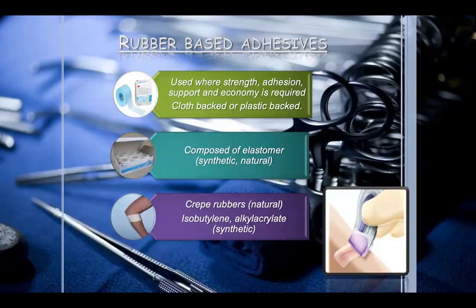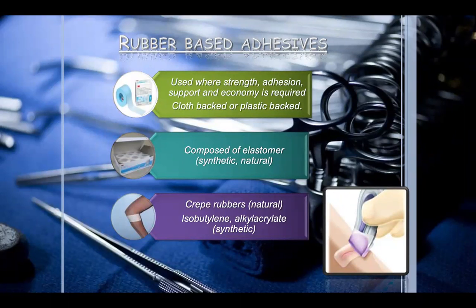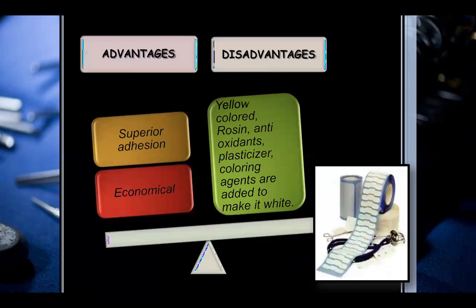Rubber-based adhesives are used where strength, adhesion, support, and economy are required. They use cloth-backed or plastic-backed materials and are composed of elastomers — both synthetic and natural — including crepe rubbers (natural), isobutylene, and alkyl acrylate (synthetic). Advantages include superior adhesion, fixation, and are economical compared to other options. Disadvantages: they have a yellow color, so rosin, antioxidants, plasticizers, and coloring agents must be added to make them white.